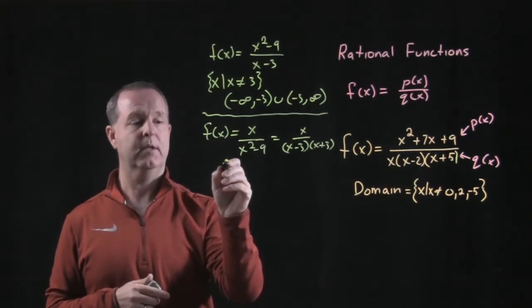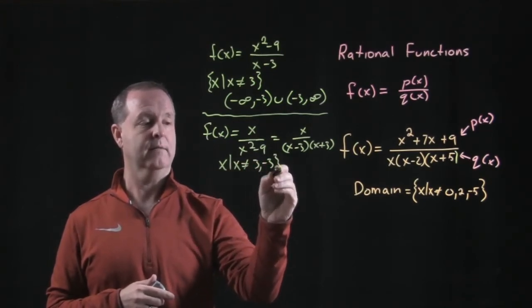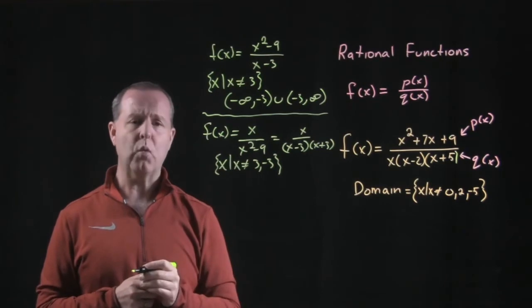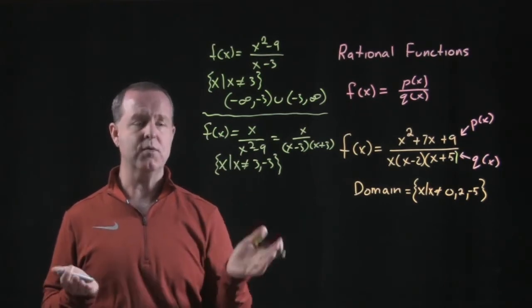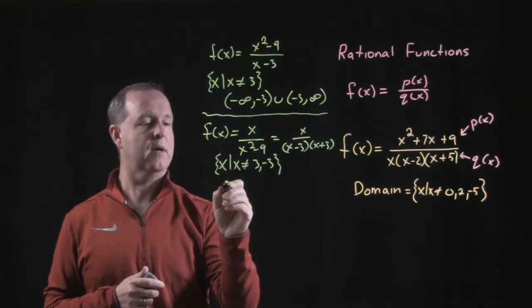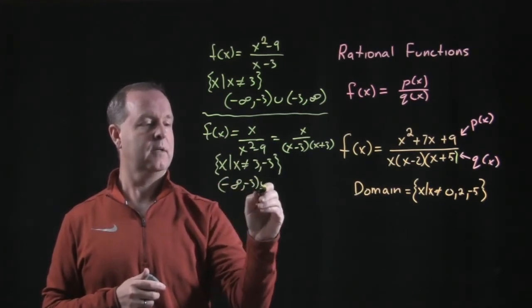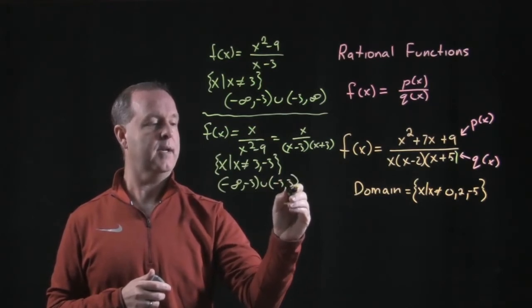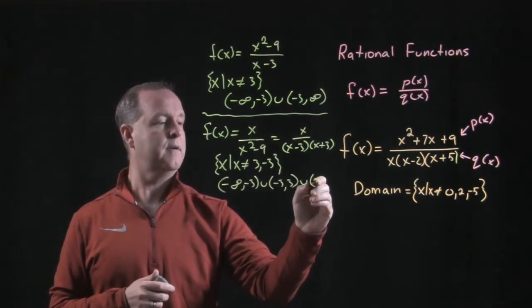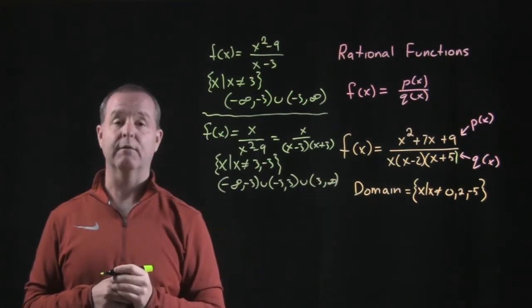So again, with set builder, that's all x such that x does not equal 3 or negative 3. Or I can write it as interval notation, as a union of several interval notation sets. So I have solutions from negative infinity to negative 3 with a union of negative 3 to positive 3 with a union of 3 to positive infinity. And that's interval notation.